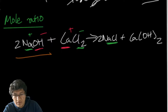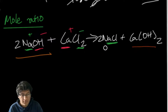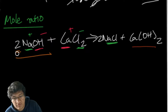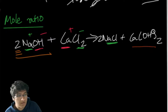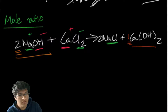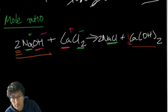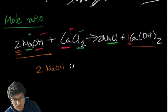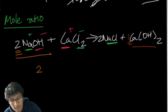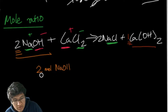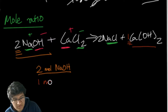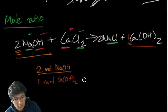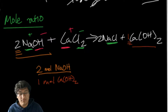Looking at the coefficients: sodium hydroxide has a coefficient of 2, and calcium hydroxide has a coefficient of 1. So the mole ratio is: 2 moles of NaOH produce 1 mole of Ca(OH)₂. That is our mole ratio, and this is where stoichiometry comes into play.